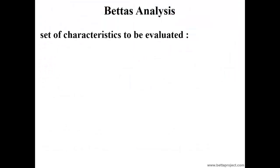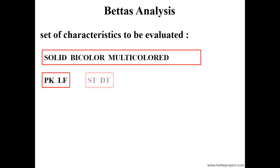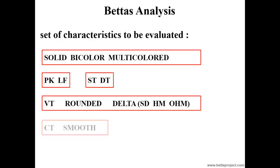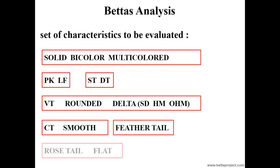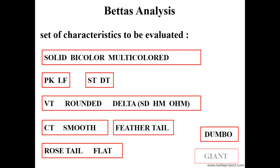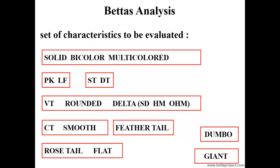To summarize what has been shown so far: we have sets of features, and within each category only a single feature can be manifesting at a time. For example, a BETA is either solid, bicolor, or multicolored — the same BETA cannot be simultaneously solid and bicolor.